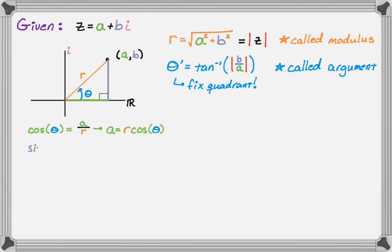And then sine of theta in the same triangle is going to be the y-coordinate, or b divided by r. And we can rearrange that. So b is r sine of theta.